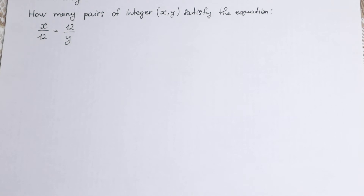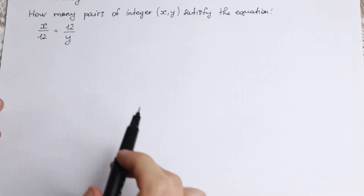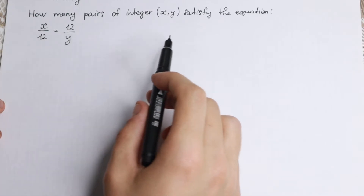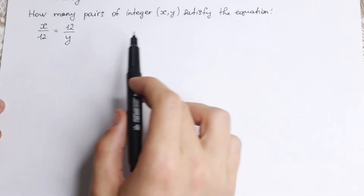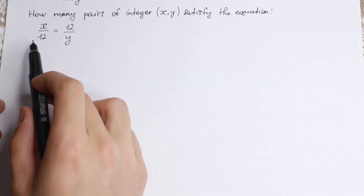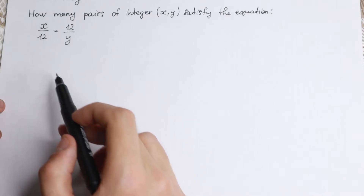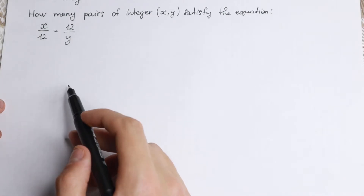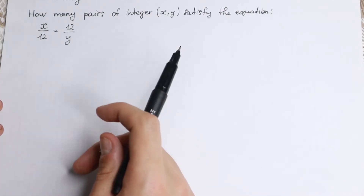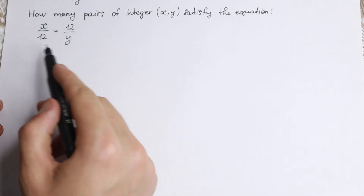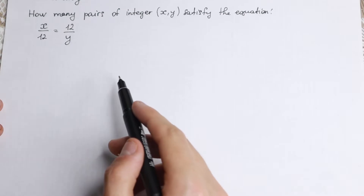Hello everyone, welcome back to Higher Mathematics. Happy to see you here. Really interesting algebra problem today. We need to know how many pairs of integer solutions satisfy this equation. We have x over 12 equal to 12 over y, and we need to find how many pairs we'll have with this solution.